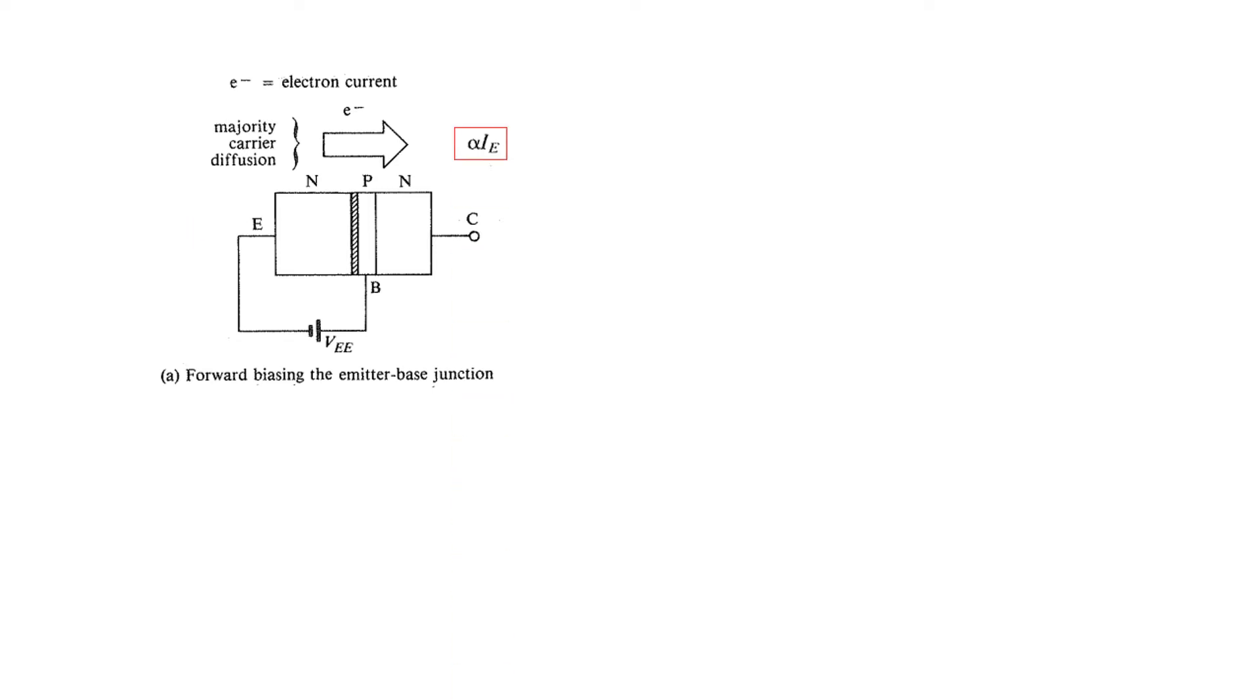Now the current here, this current will be called alpha times IE. The current here is IE but the moment it crosses the base, some of the electrons are lost in the base due to recombination. So the remaining electrons that come into the collector, their value will be equal to alpha IE. So this is one of the values.